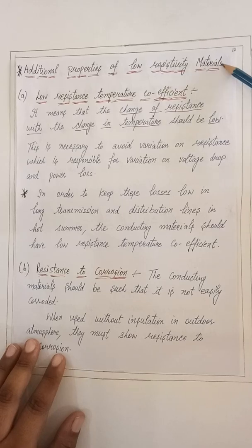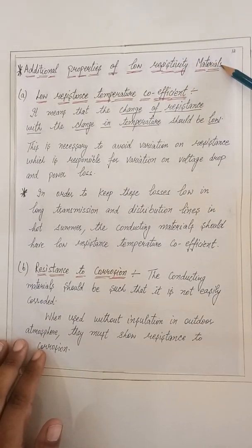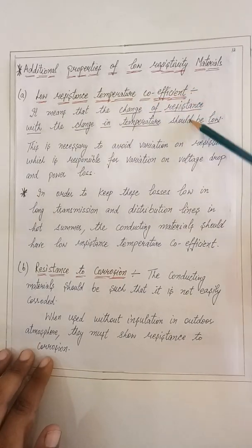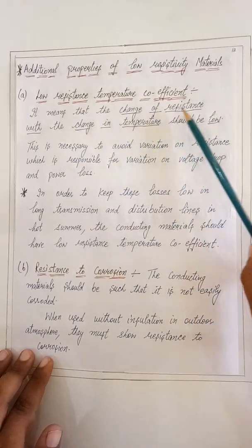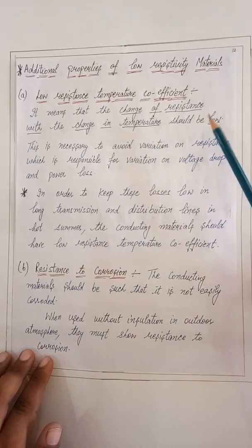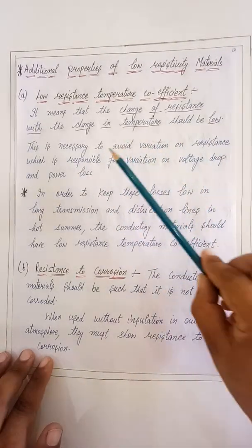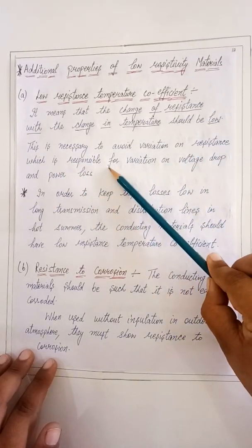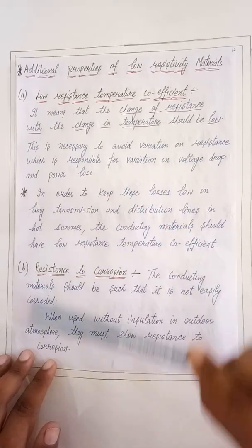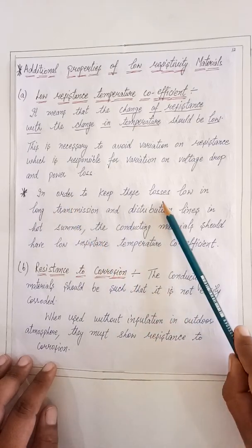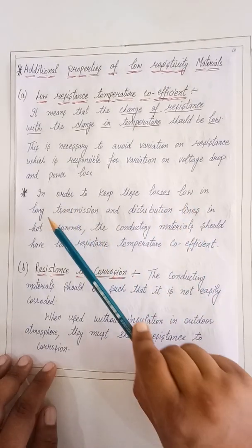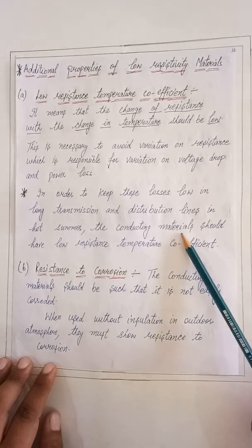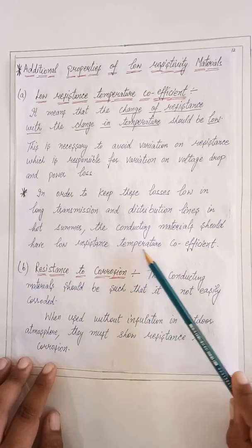Now we have the additional properties of these low resistivity materials. The first property is low resistance temperature coefficient. It means that the change of resistance with the change in temperature should be low. This is necessary to avoid variation in resistance, which is responsible for changes in voltage drop and power loss. In order to keep power loss low in long transmission and distribution lines in hot summer, the conducting material should have a low resistance temperature coefficient.